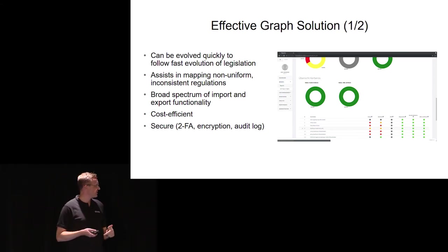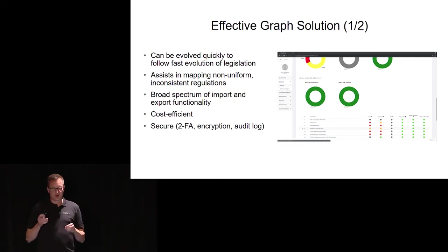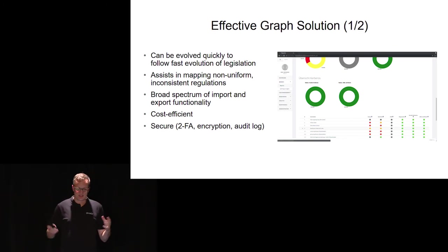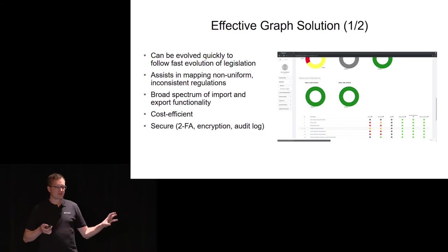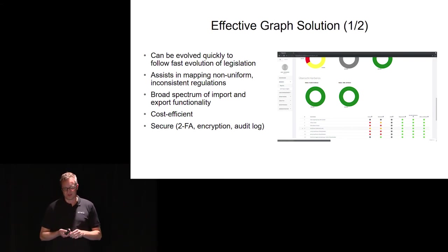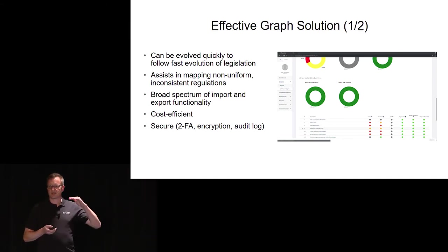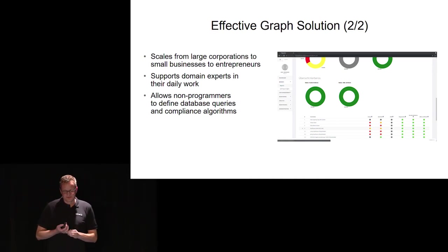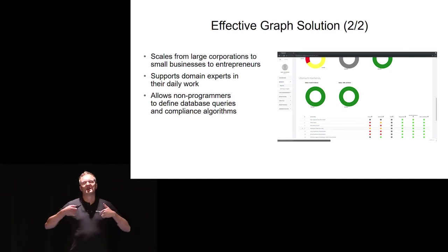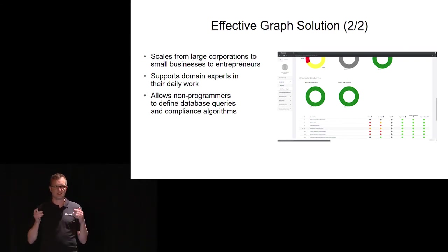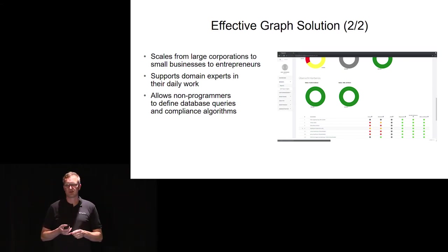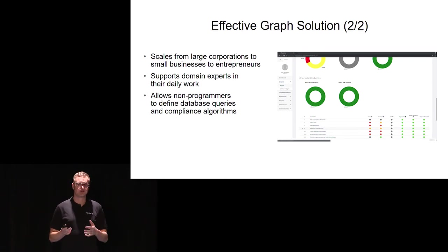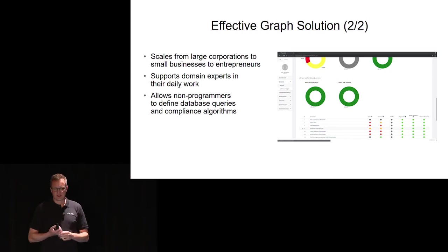An effective graph solution only works if you can evolve as quickly as your legislation or your users' needs change — everything is non-uniform and inconsistent and you have to keep track of that quickly. It comes with a broad spectrum of import and export interfaces, and because most basic functionality is already built into the platform it's very cost-effective, which is important when you want to scale from a single-person business up to an enterprise. Of course it also has to be secure and meet a high standard of security. This solution supports domain experts in their daily work by giving them the tools to define processes without needing developers — that's a major step in this industry.